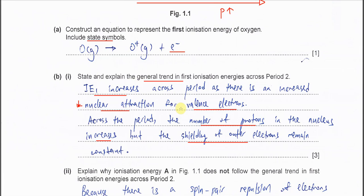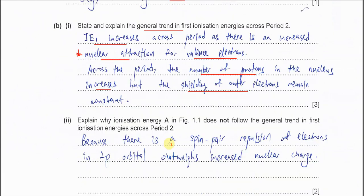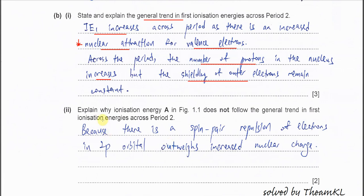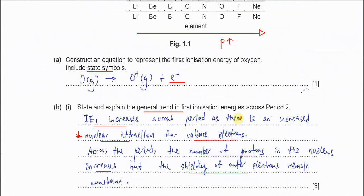That's the reason why we have this general increase. Proton increases, the shielding almost constant. Okay, part two. Explain why ionization energy A does not follow the general trend. Okay, this is the irregularities.